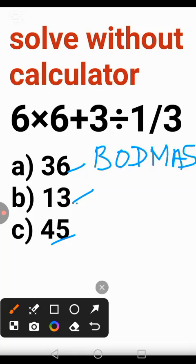We begin with D, which is division. We have 6×6+3÷1/3, division turned to multiplication.